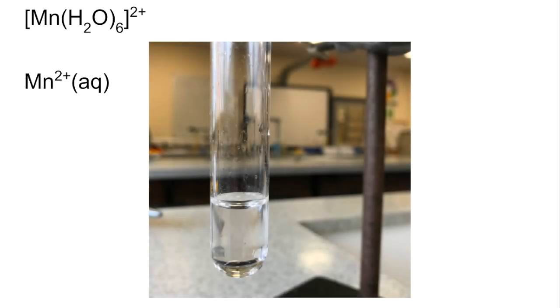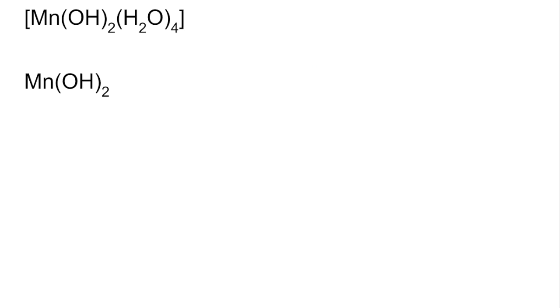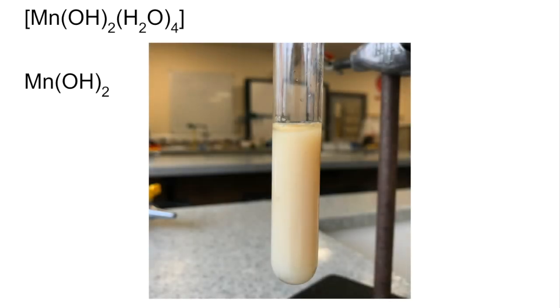Aqueous Mn2+ is a very pale, so pale it almost looks colorless, solution. Manganese 2 hydroxide is a light brown precipitate which darkens in air.